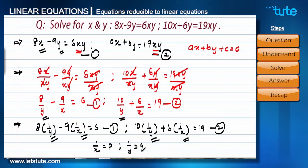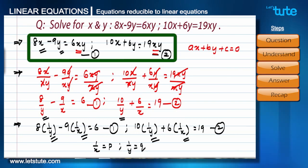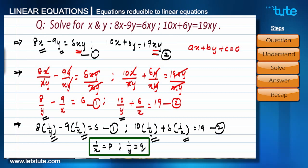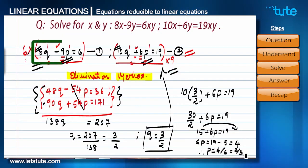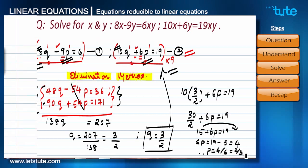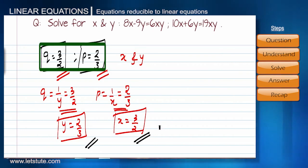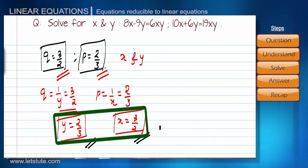Finally we got the values for x and y. In this section, equations were given in x and y but they were not linear. We have converted them into p and q, they became linear. We have solved them with whatever options we had in methods. We have selected elimination method, and by that we got values for p and q, and from them we got x and y.